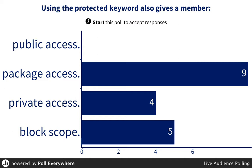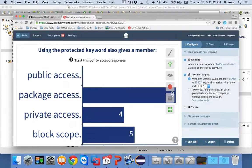These questions are tricky because you're looking at them and wondering what they mean. A member could be a method, or it could be a property or a field — both are different member types.